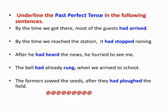The farmers sowed the seeds after they had ploughed the field. First the farmers ploughed the field, and next they sowed the seeds. So the first action is ploughing the field — 'had ploughed' in past perfect. The next action, sowing the seeds, is in simple past: 'sowed.' The farmers sowed the seeds after they had ploughed the field.